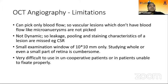However, OCT angiography also has limitations. It can only pick up blood flow, so vascular lesions without flow — like microaneurysms — are not detected, and it is not dynamic, so leakage, pooling, and staining characteristics are missed. The examination window is only 10 to 12 millimeters, making it difficult to use in uncooperative patients or those unable to fixate properly.